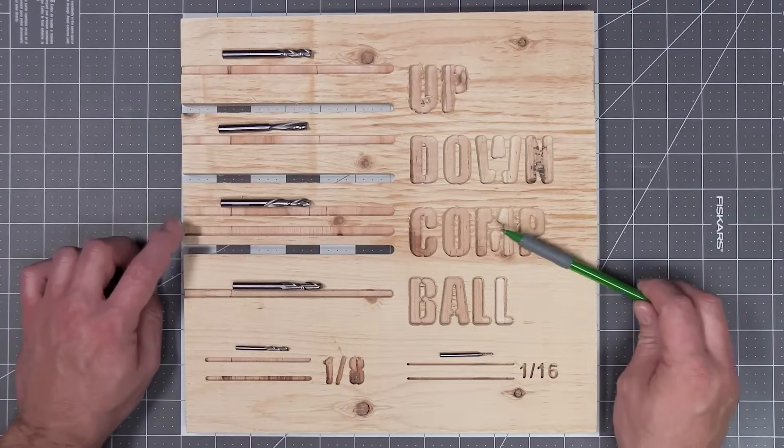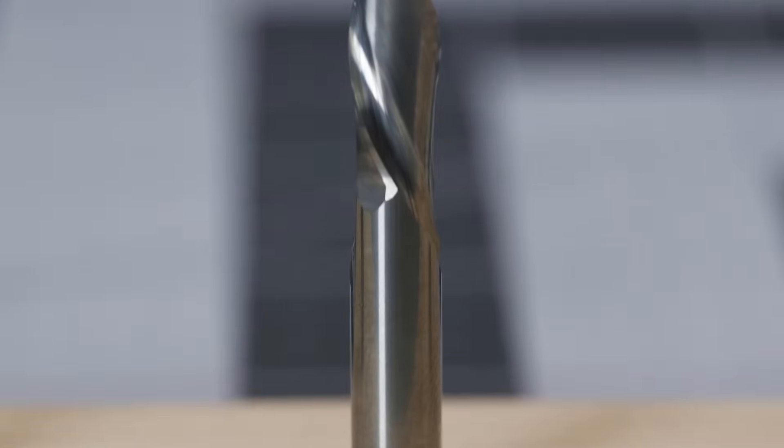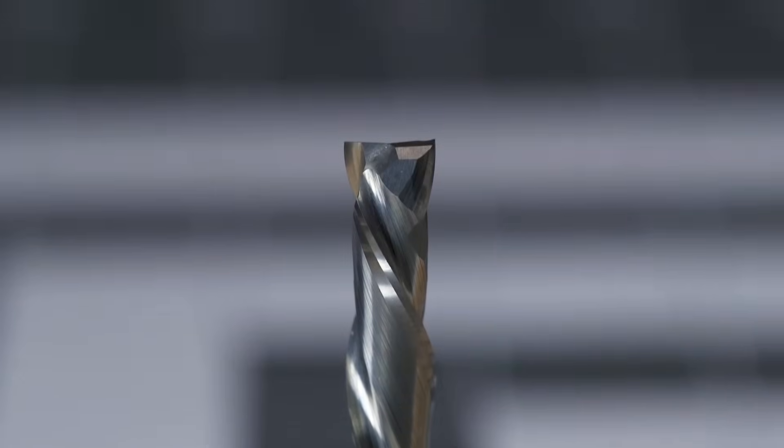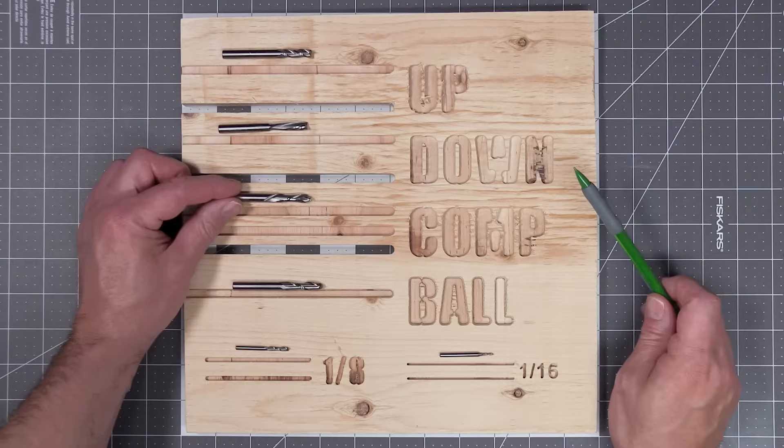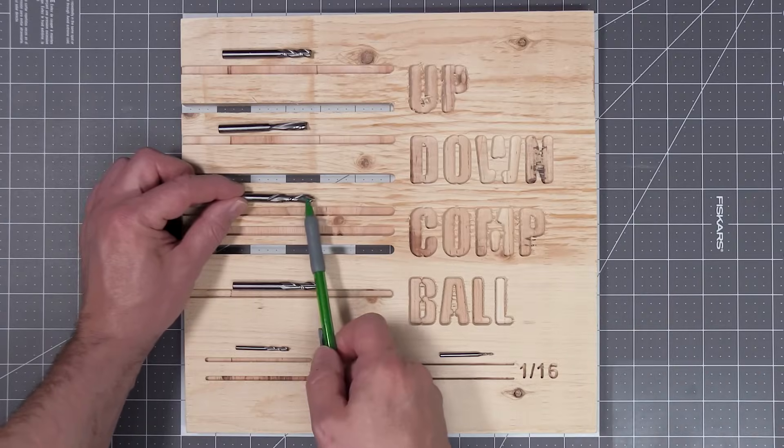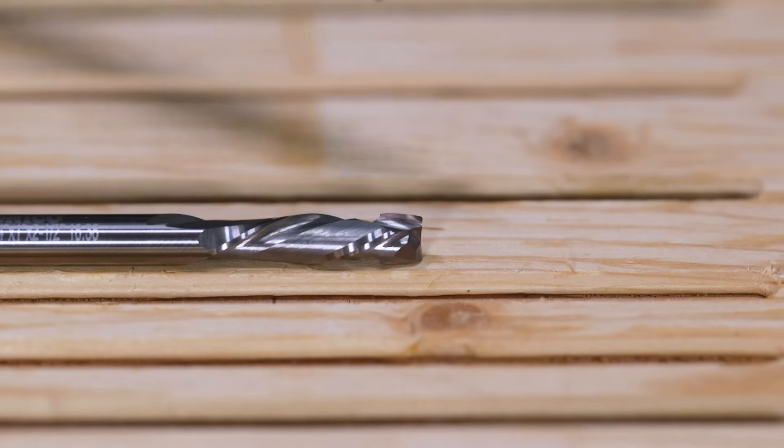The next bit we're going to look at is called a compression bit, and a compression bit is a combination of an upcut and downcut bit. The compression bit starts with an up spiral and then transitions to a down spiral.